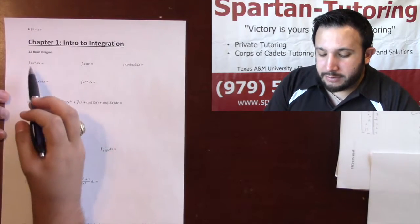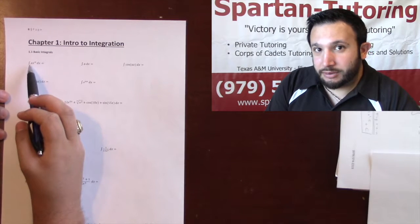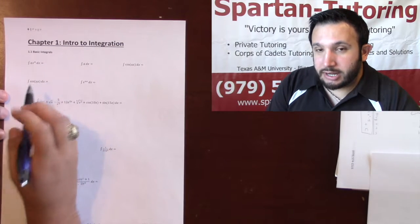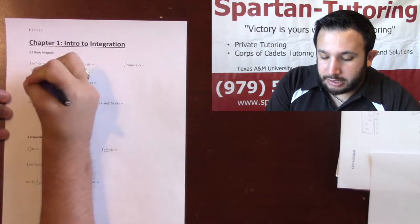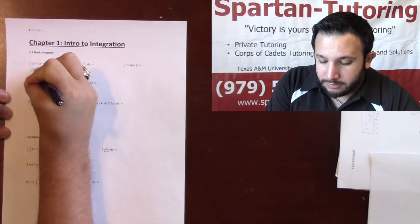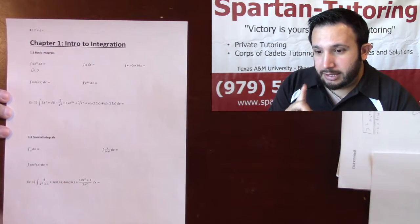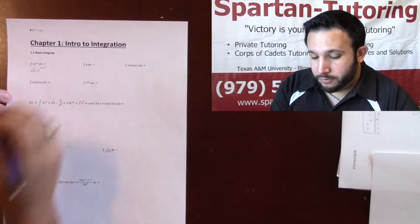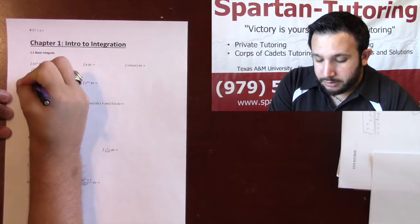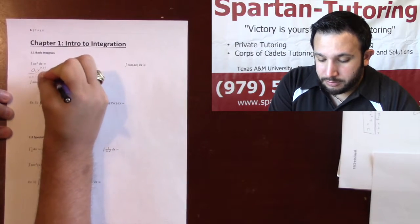So let's say I have some arbitrary ax to the n where a and n are just any numbers. The way that I like to do this, especially when first starting out, is I rewrite my constant and my variable. Then I add one to the top, take that number, flip it, multiply it in front, and then plus c.